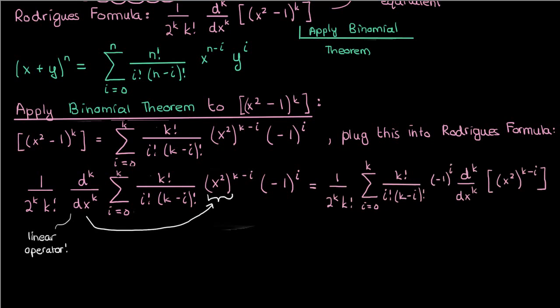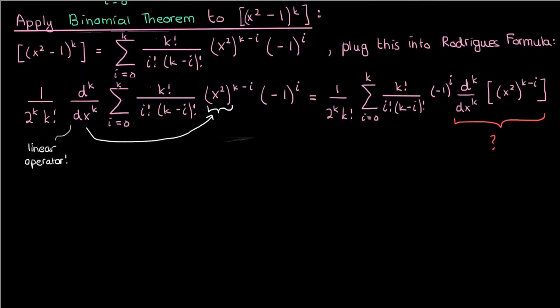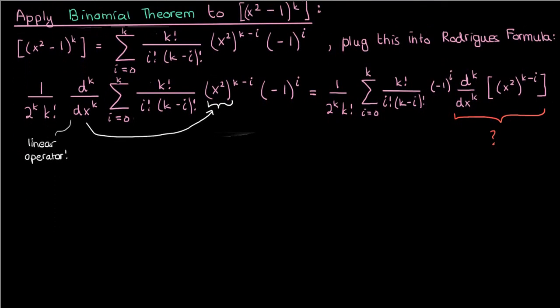Now here's the slightly tricky part. How do I find a nice expression for the kth derivative of x squared to the power k minus i? Well I could do one of two things. I could start crying and send an email to my prof to make the class less difficult, entitled undergrads, or I could derive an equation myself. In this video I'll be doing the latter.